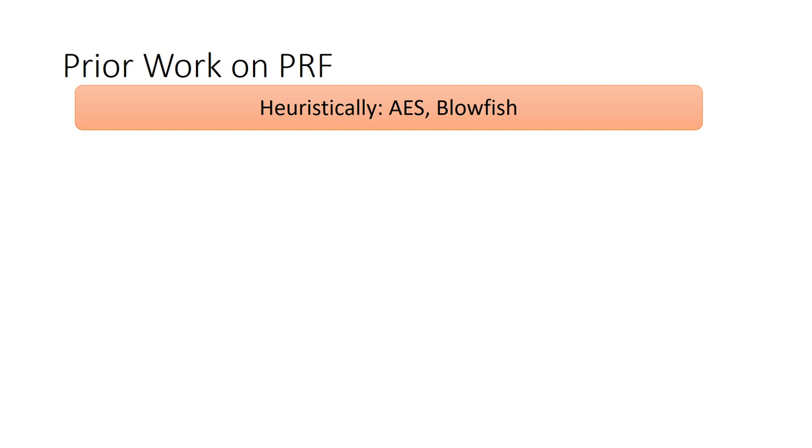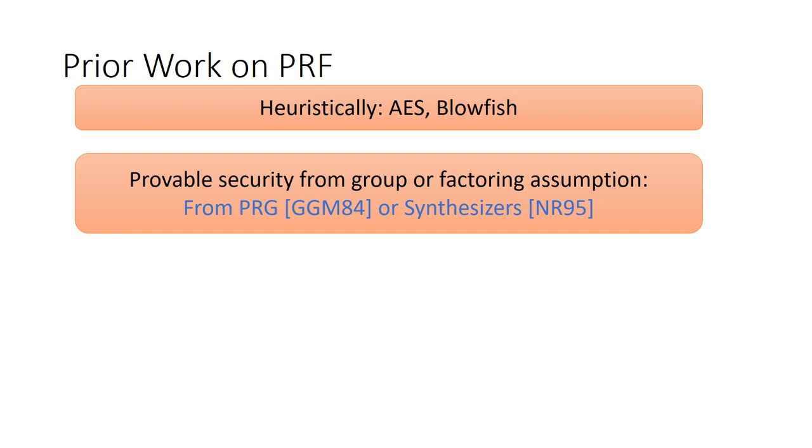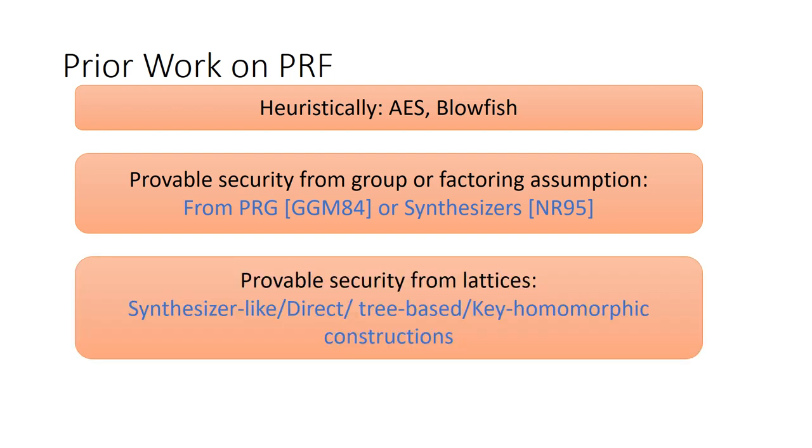Next, let us recall some prior work on PRF. The first type of PRF is heuristic construction, for instance AES, which is widely deployed in practice. However, they don't have rigorous security argument. In order to establish formal proof for PRF, GGM and NR95 constructed PRF from more fundamental primitives such as PRG and synthesizers, which can be instantiated based on group and factoring assumptions. Then, with the consideration of post-quantum security, many excellent PRFs such as synthesizer-based, direct, tree-based, key-homomorphic constructions have been proposed.